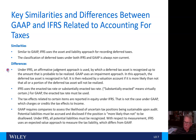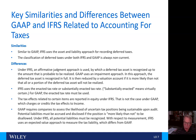Under IFRS, number one, an affirmative judgment approach is used, by which a deferred tax asset is recognized up to the amount that is probable to be realized. GAAP uses an impairment approach, in which the deferred tax asset is recognized in full, then reduced by a valuation account if it is more likely than not that all or a portion of the deferred tax asset will not be realized. Number two, IFRS uses the enacted tax rate or substantially enacted tax rate — meaning virtually certain — while for GAAP, the enacted tax rate must be used.